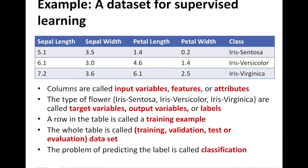Here we have an example data set for flowers where we are looking at different attributes: sepal length, sepal width, petal length, and petal width. These are the different attributes. And the class is what we're trying to predict, which is based on all these attribute values, what type of flower it is — whether it is iris setosa, iris versicolor, or iris virginica.